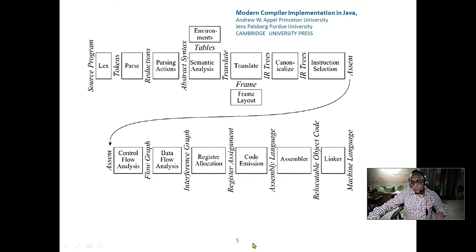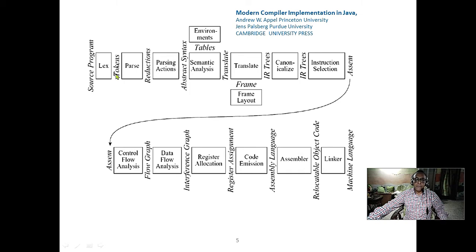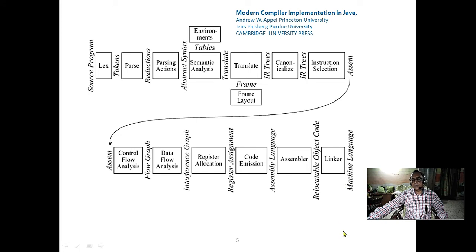Here is another interesting diagram showing the same thing. The lexical analyzer is sometimes called the scanner. It generates a token, which is saved in the symbol table. The symbol table should be central. The token is the key unit. This is the parsing action and semantic analysis — this is the front end, this is the back end — and there are lots of stages.